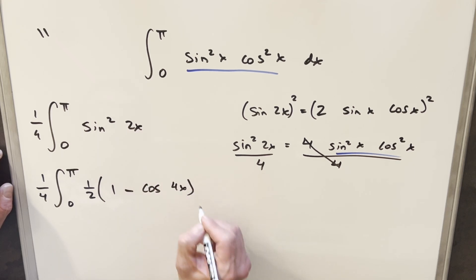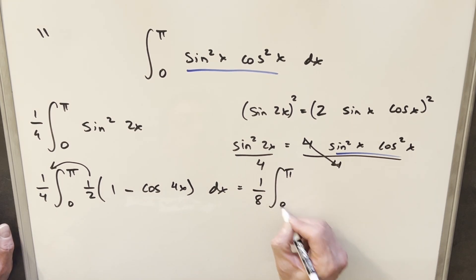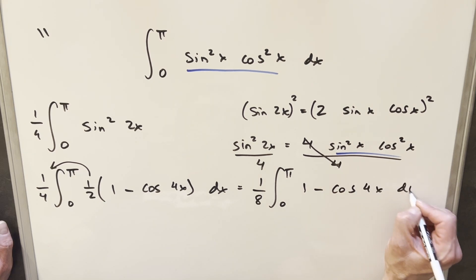Then I can bring this 1 half out front, and so now we're going to have 1 eighth in front of the integral. Still going 0 to pi. 1 minus cosine 4x dx.